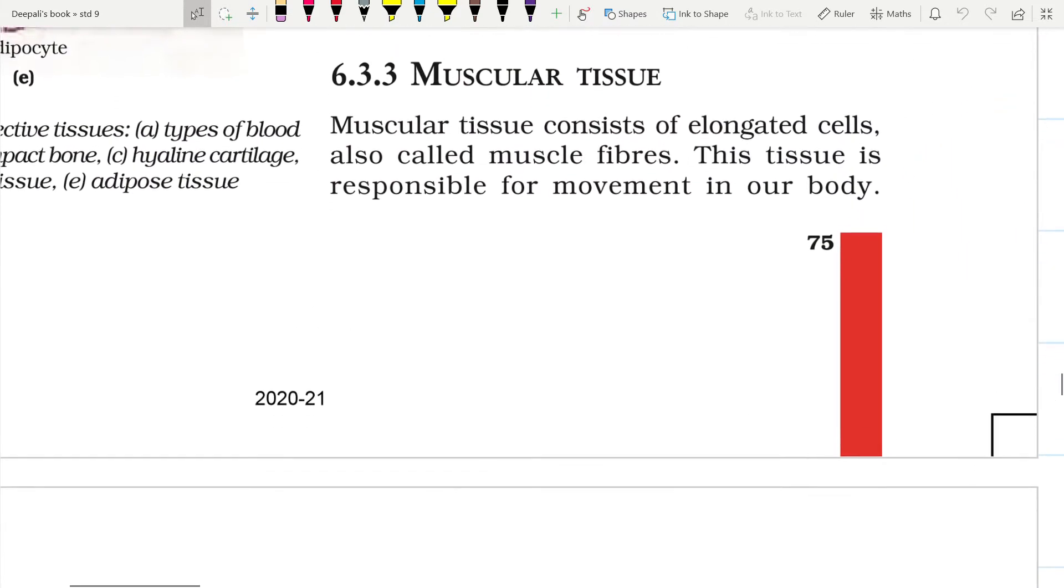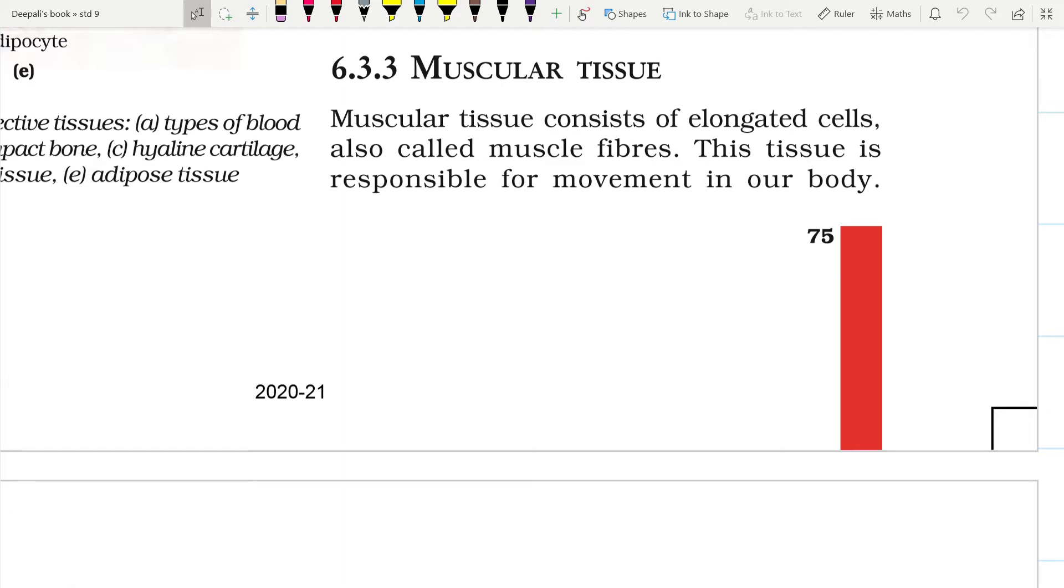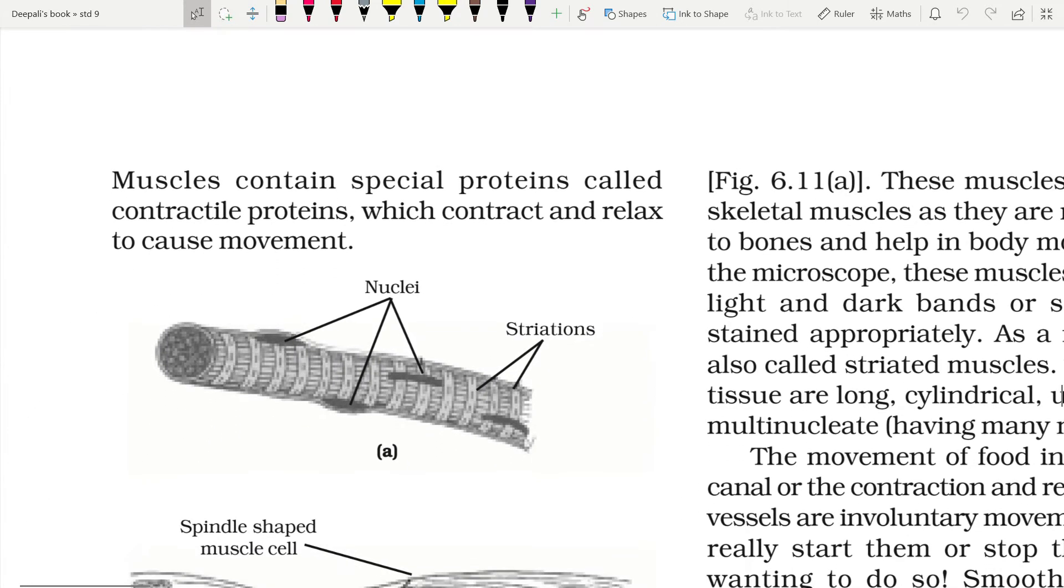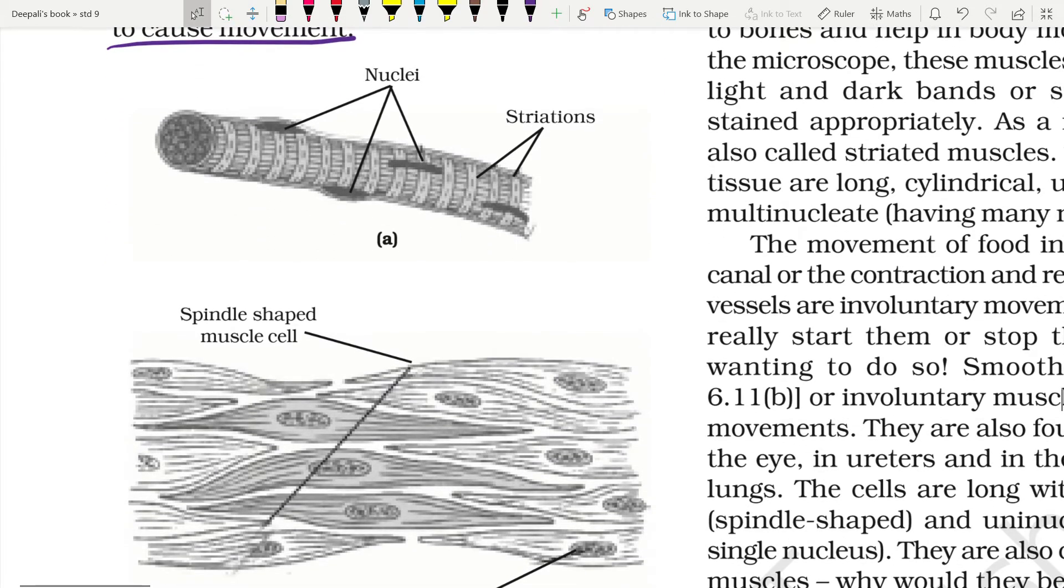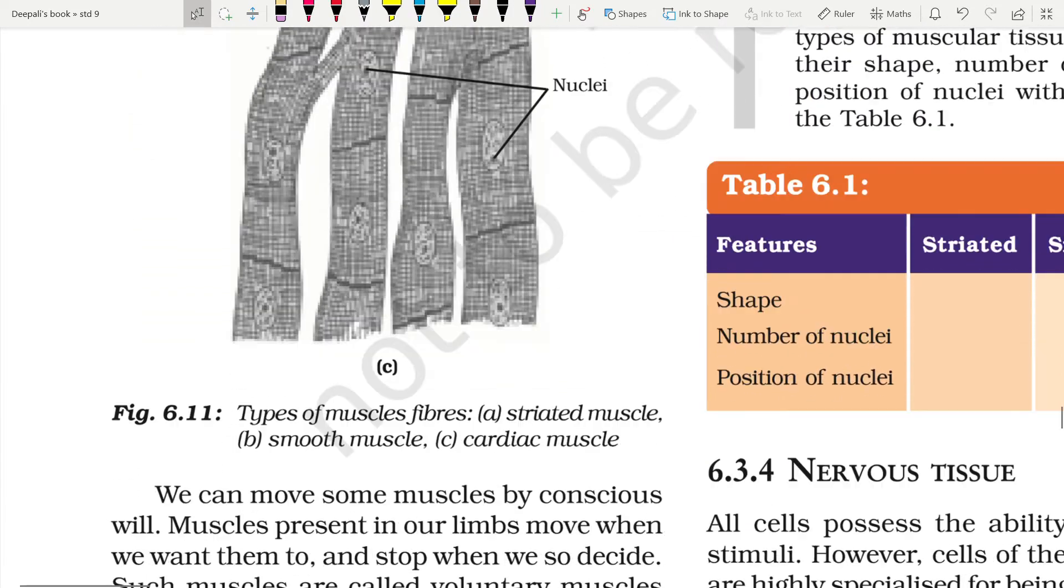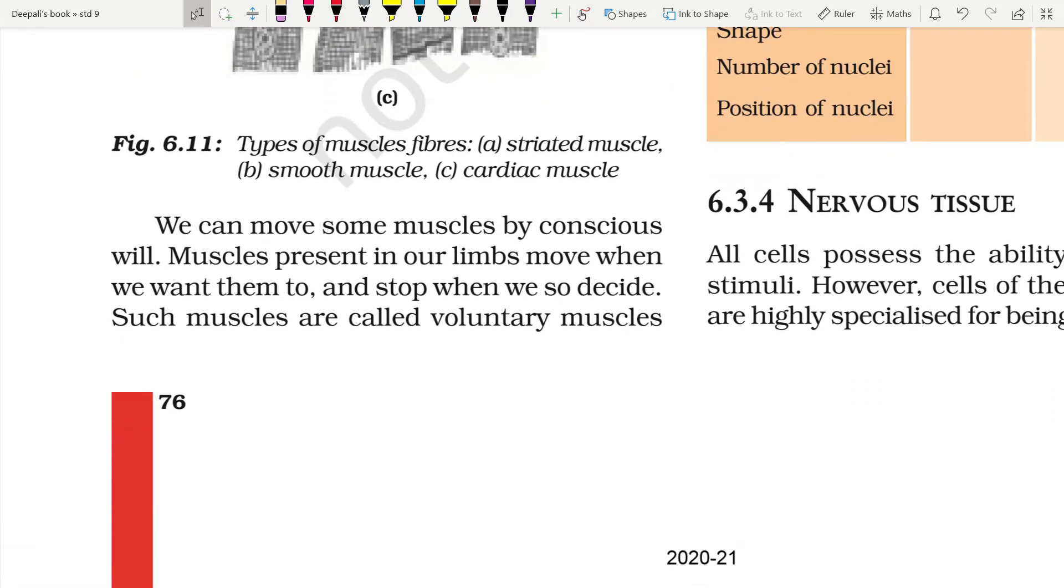This tissue is responsible for movement in our body. Muscle contains special proteins called contractile proteins which help in contraction and elongation or relaxation for the cause of movement. So we can either stretch or bend our arms or legs or body parts as and how we want.